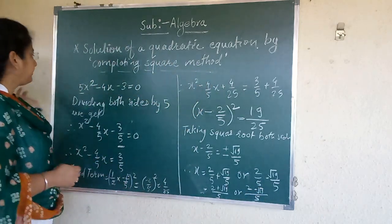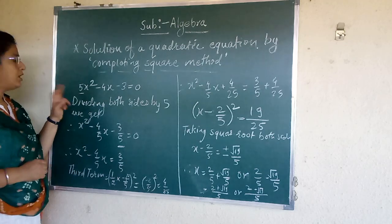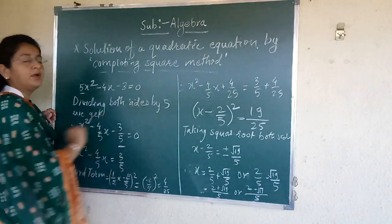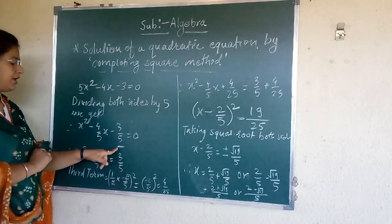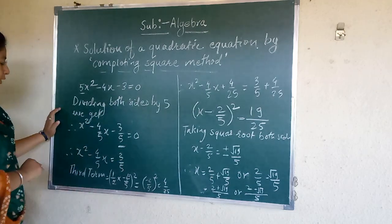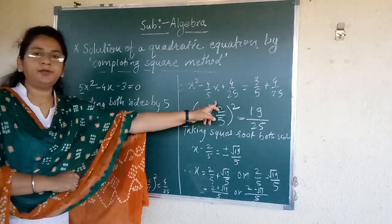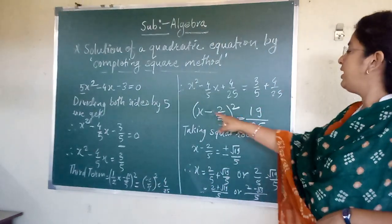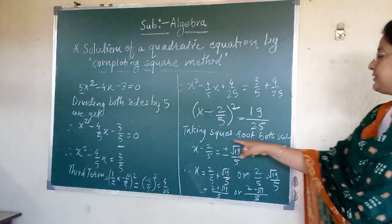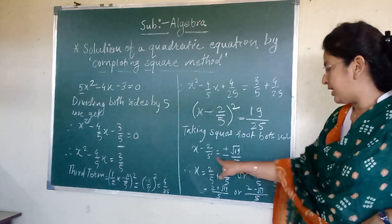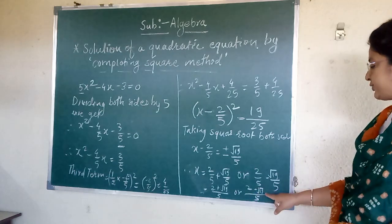See the example again. Here the example is different because coefficient of x² is not 1. Here 5 was there. That is why we divided by 5 each term. After dividing we got x² - 4/5x - 3/5 = 0. After doing that we have to find a third term. We found here third term that added both the sides. After adding in both sides we got this answer: (x - 2/5)² = 19/25. Next, taking square root both the sides we got this answer. And the roots are (2 + √19)/5 and (2 - √19)/5.